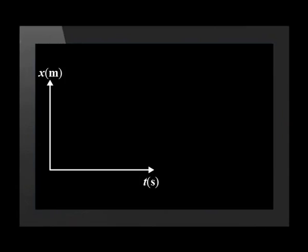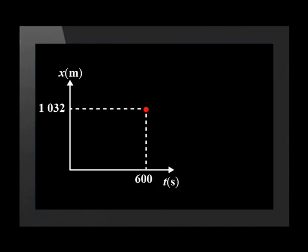Since we know the total displacement of the boy and that the gradient of the displacement-time graph is a straight line, we can draw the displacement-time graph. First, we draw our x and y axes and label them appropriately. We plot the total displacement of 1032 meters at 600 seconds, and then we join the zero point — since the boy started at zero displacement — to the end point we marked. And we have our displacement versus time graph.